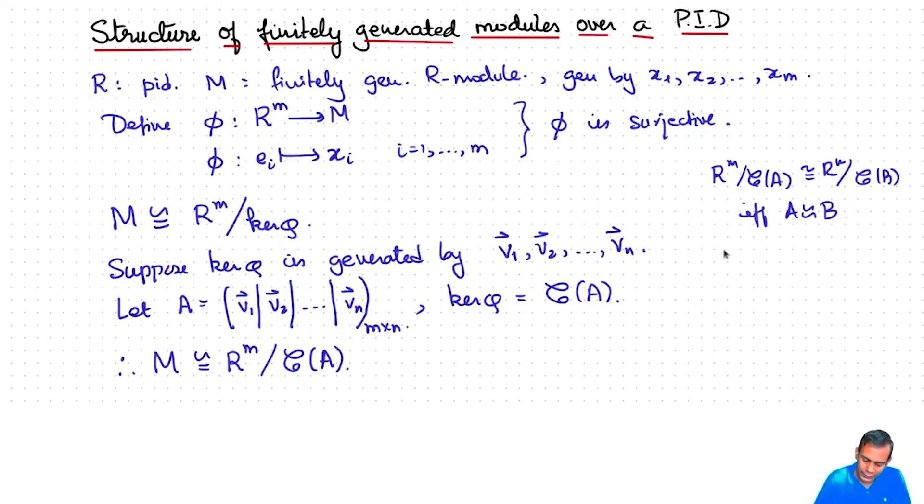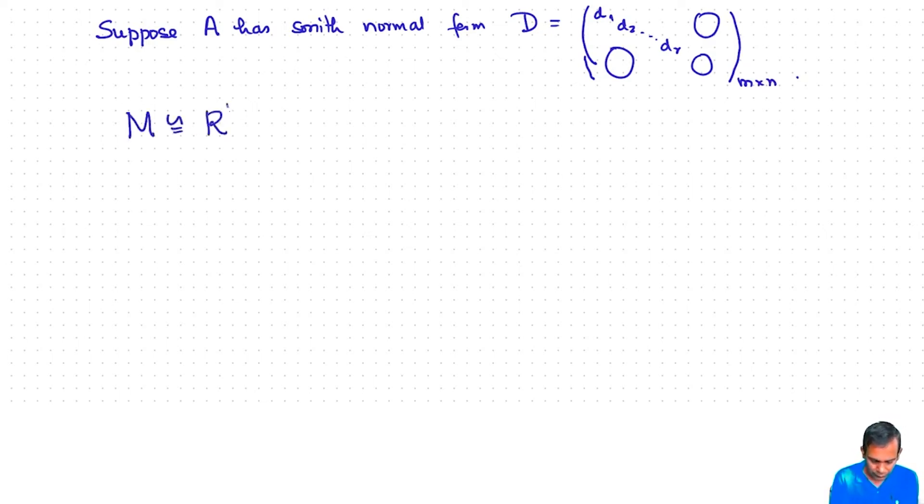So let's use that. We also know that A is equivalent to a matrix in Smith normal form. Let's call it D, and that's d1, d2, up to dr and then zeros. If we can find that in this case as well, then what we have is that M is isomorphic to R^m mod column space of A, but A is equivalent to D, so M is isomorphic to R^m mod column space of D.